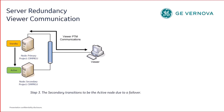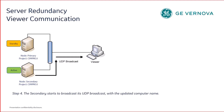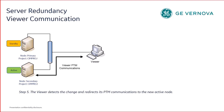When the failover happens, the secondary transitions to become the active node. The secondary starts to broadcast its UDP broadcast with the updated computer name, and the viewer detects the change and redirects its ETM communications to the new active node.